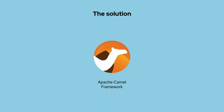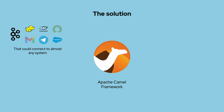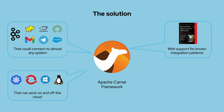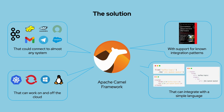The solution is the Apache Camel framework, which provides more than 300 connectors to various systems, an implementation of enterprise integration patterns, runs in the cloud or on-premises, and uses Java, XML, or YAML-based domain-specific languages.